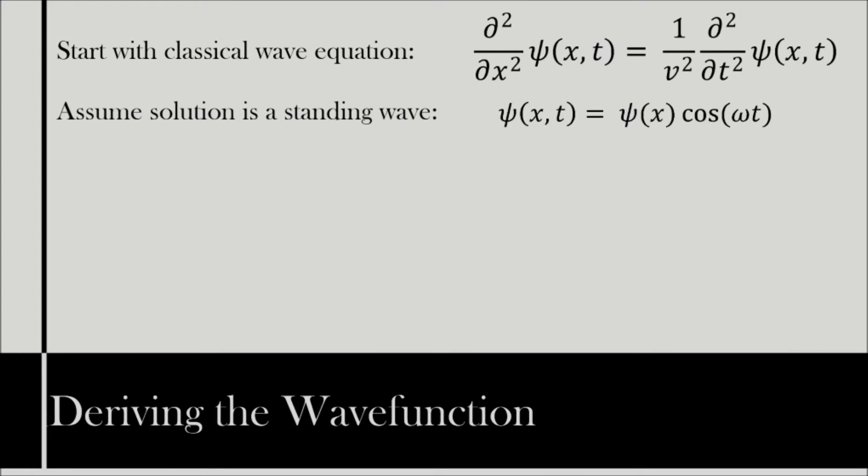One form of his wave equation can be derived from the classical wave equation: second order partial differential with respect to x of ψ(x,t) equals 1 over v squared times second order partial differential with respect to t of ψ(x,t). Assuming that the solution is going to be a standing wave of the form ψ(x,t) equals ψ(x) times cos(ωt), we substitute this into the classical wave equation, giving us equation three.